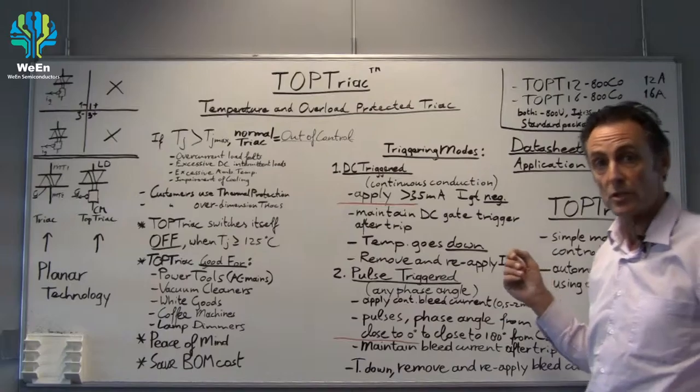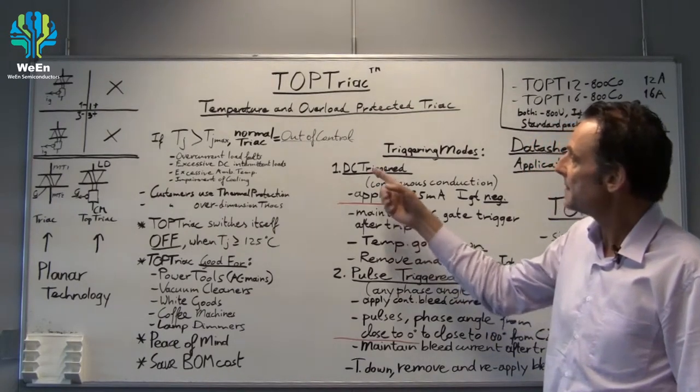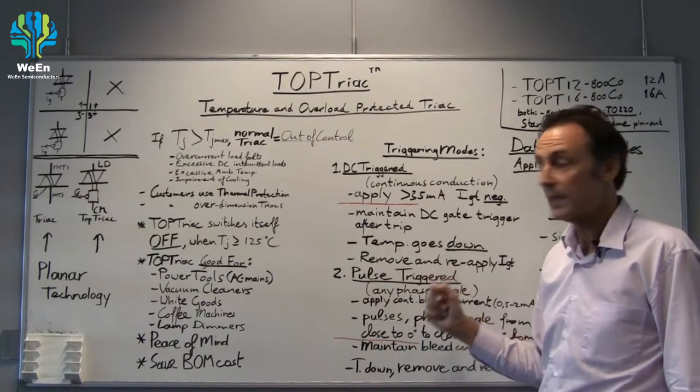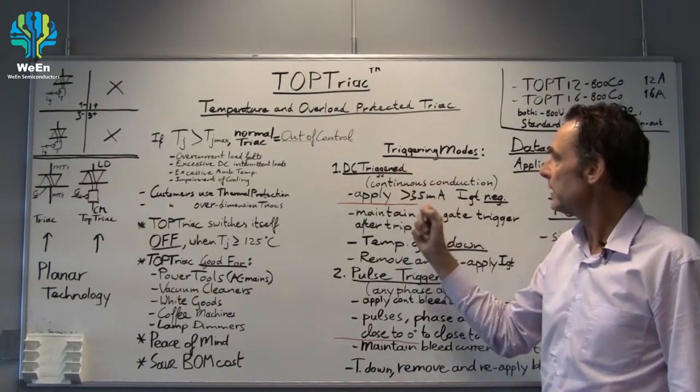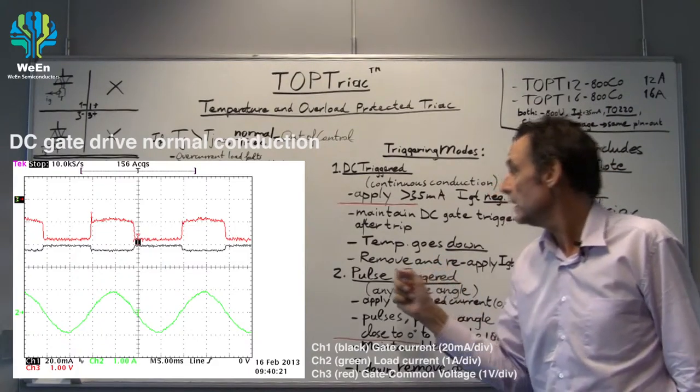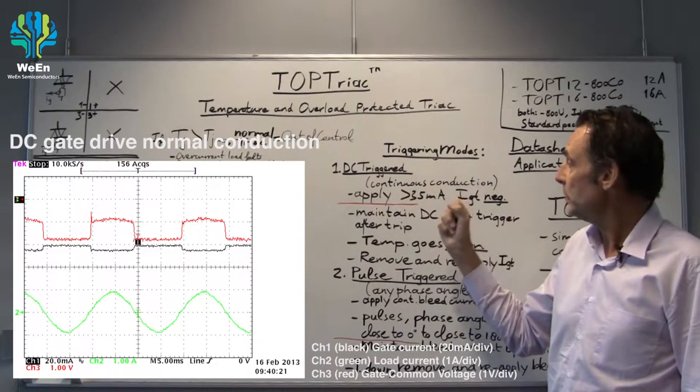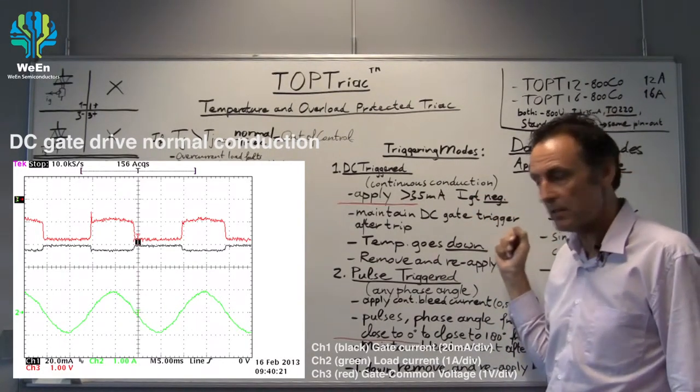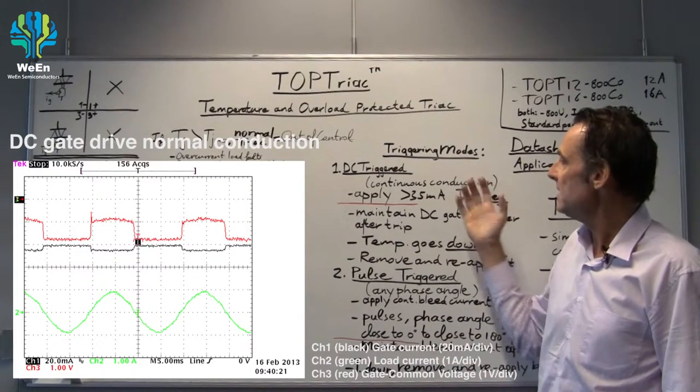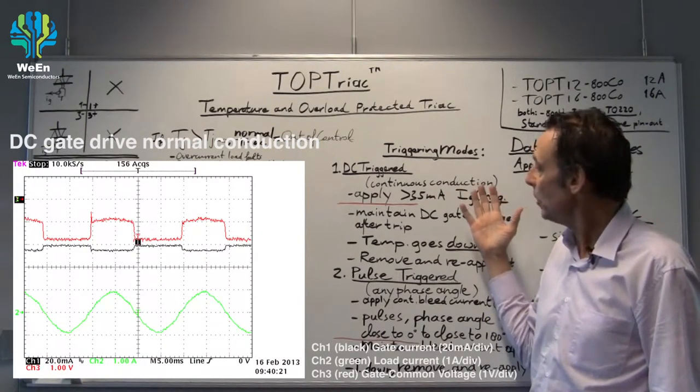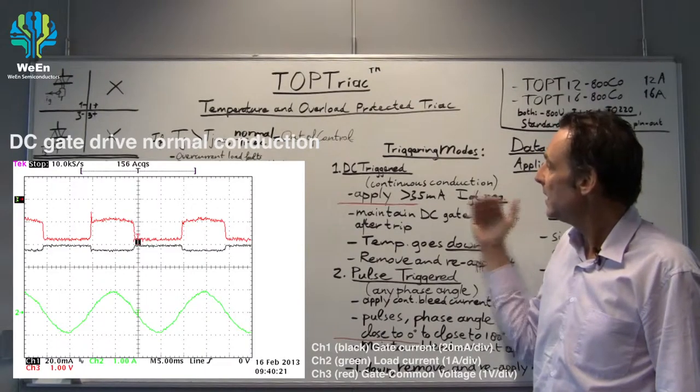Let's look at the triggering modes of the TOP TRIAC. You can either have DC triggering or pulse triggering. If we do DC triggering there is continuous conduction. You have to apply more than 35 milliamps gate current, negative gate current of course, and then if the TRIAC gets too hot it will switch off.